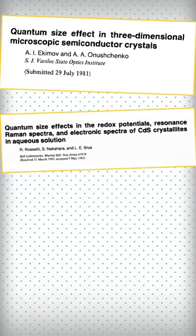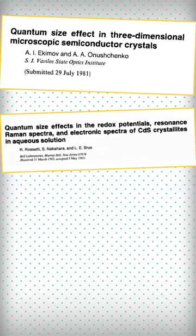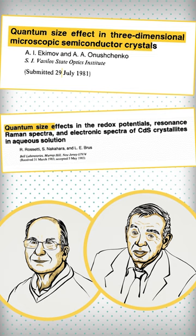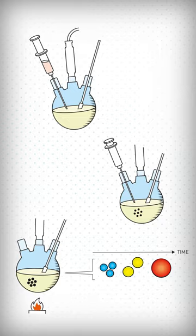Scientists used to think making quantum dots would be impossible. Dr. Ekimov and Dr. Brus were the first to observe and make quantum dots in the 1980s. Dr. Bawendi invented a practical way to make better quantum dots, which meant that they could be used more widely.